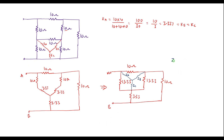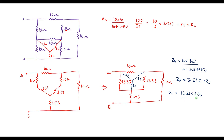Z_A can be calculated as the product of the two adjacent resistors — that is 10 into 13.33 — divided by the sum of the three resistors, that is 10 plus 13.33 plus 13.33. Solving this, we get Z_A equal to 3.636 ohm. Z_B also has the same value, 3.636 ohm. Z_C equals the product 13.33 into 13.33 divided by 10 plus 13.33 plus 13.33, which gives Z_C equal to 4.846 ohm.